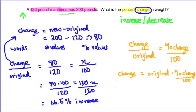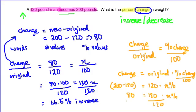Let's work this out. The change is 200 minus 120, equals the original amount of 120 times N percent. So 80 equals 120 times N percent. Dividing both sides by 120, I get 0.6 repeating equals N percent. Since the equation gives a decimal, I convert it back to a percent: 66.6 repeating percent.